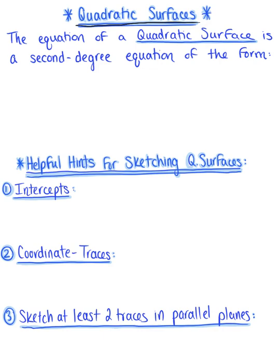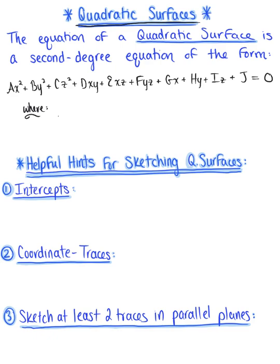The equation of a quadratic surface is a second degree equation of the following form: ax squared plus by squared plus cz squared plus dxy plus exz plus fyz plus gx plus hy plus iz plus j equals zero, where a, b, c, d, all the way up to j are all constants that are not all zero.